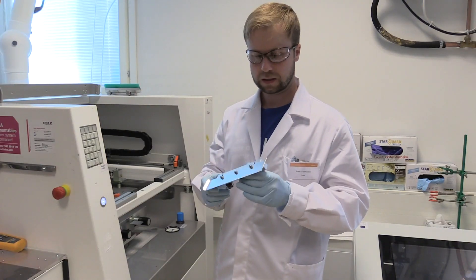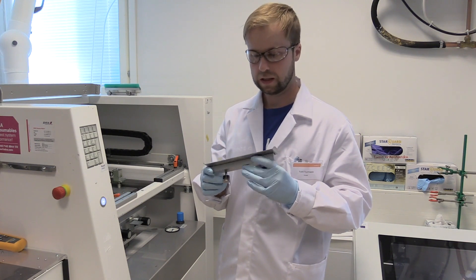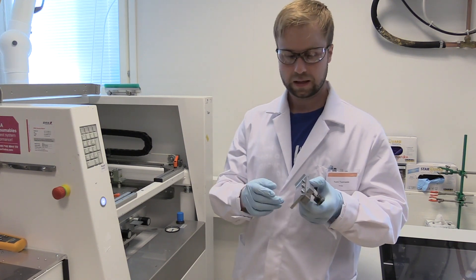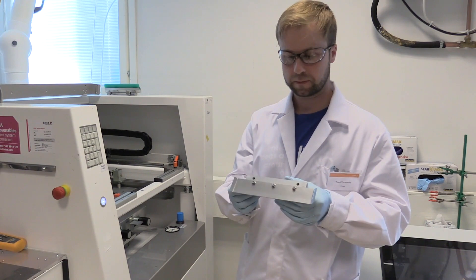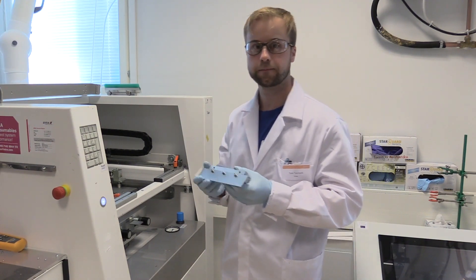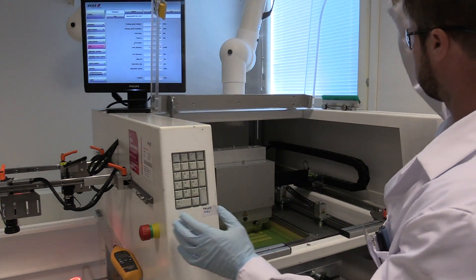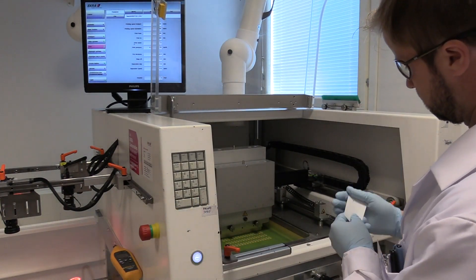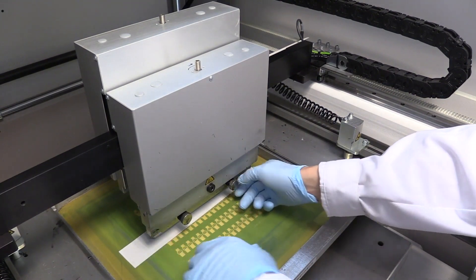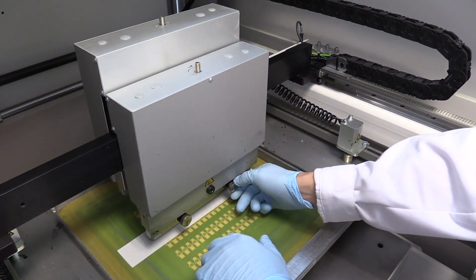Seuraavaksi asetetaan musteenlevitin, säädetään sen etäisyys painoverkosta ja liikerata laitteen sisällä. Tarkistetaan, että musteenlevittimen etäisyys painoverkosta on optimaalinen.